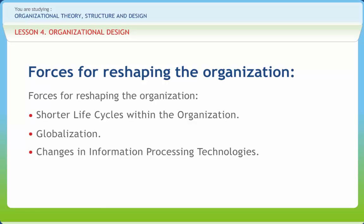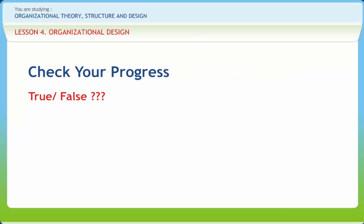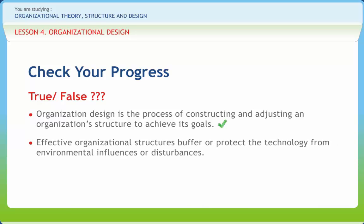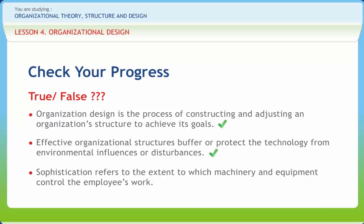Organizations are complex social structures composed of numerous interrelated components. People can work better in organizations if they understand how their jobs and departments relate to other jobs. Organization design is the process of constructing and adjusting an organization's structure to achieve its goals — Right. Effective organizational structures buffer or protect the technology from environmental influences or disturbances — Right. Sophistication refers to the extent to which machinery and equipment control the employee's work — Wrong.